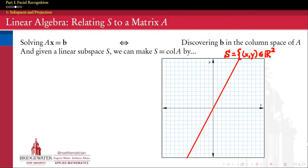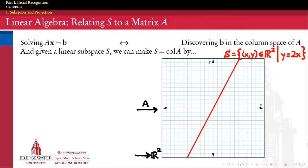Let's start by illustrating this with an example. I'm going to take the vector space R2 and the subspace inside of it consisting of the points for which y is equal to 2x. You can convince yourself that this is a linear subspace. So how are we going to find a matrix A of which S is the column space?